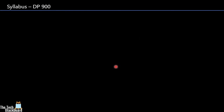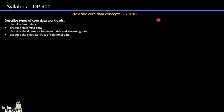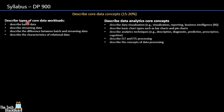The syllabus section covers all the topics you need to prepare to clear the examination. The first area is 'Describe Core Data Concepts,' which has a weightage of 15 to 20 percent. This area is divided into two major subsections: 'Describe Types of Core Data Workloads' and 'Describe Data Analytics Core Concepts,' each further divided into subheadings. I will provide all important links from Microsoft's site where you can find these details.